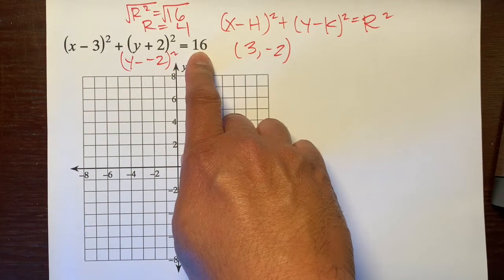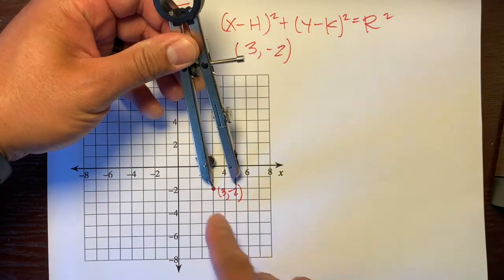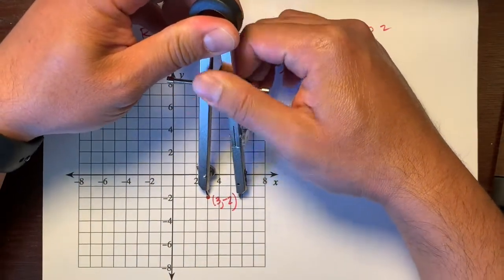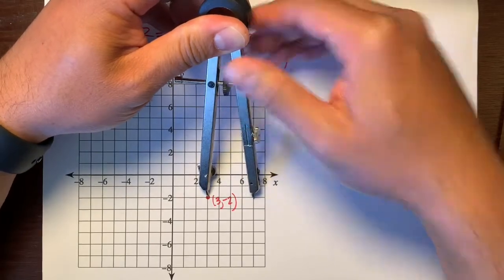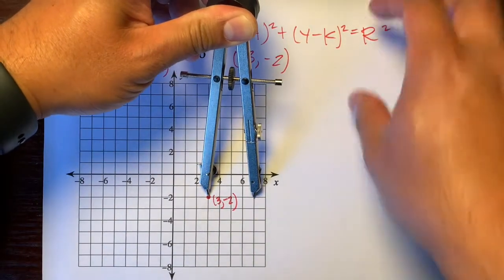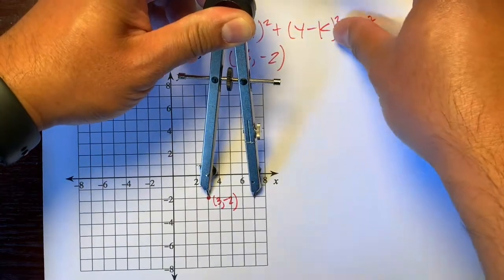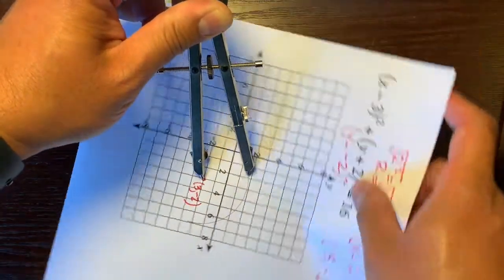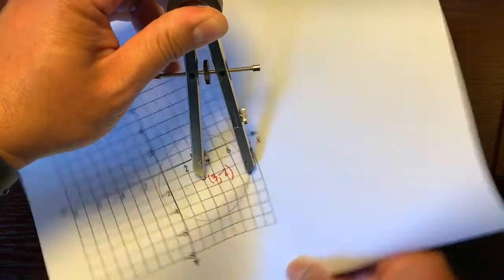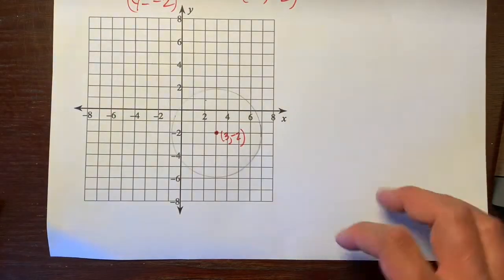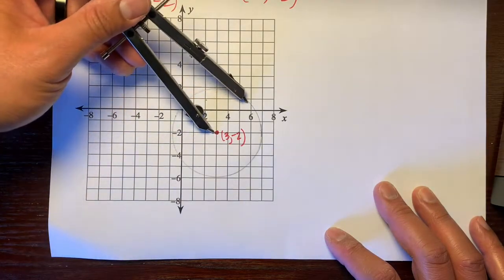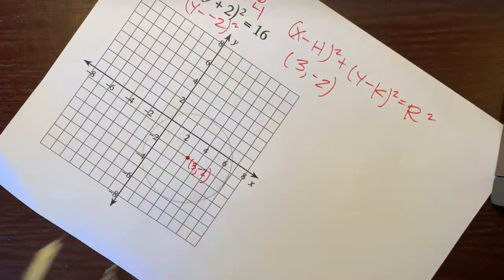So we'll rotate it. And hopefully it doesn't wiggle around too much. And there you go. That's about 4 units. 4 units. You can even take your compass and go 4 units there. 4 units. 4 units. 4 units all the way around.